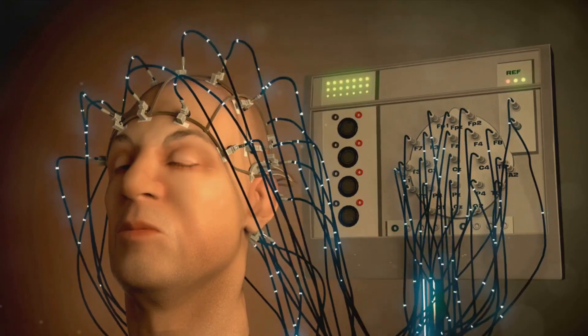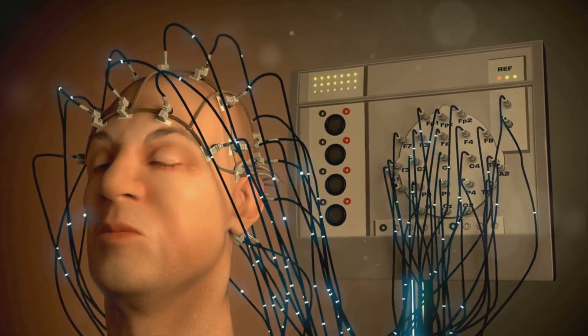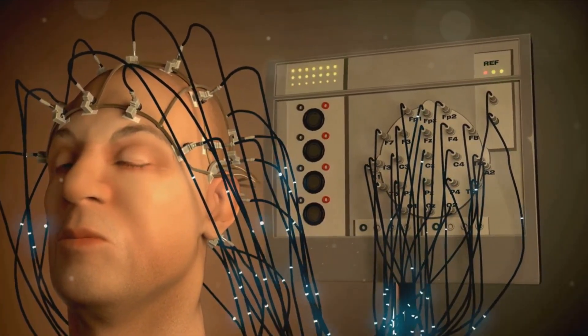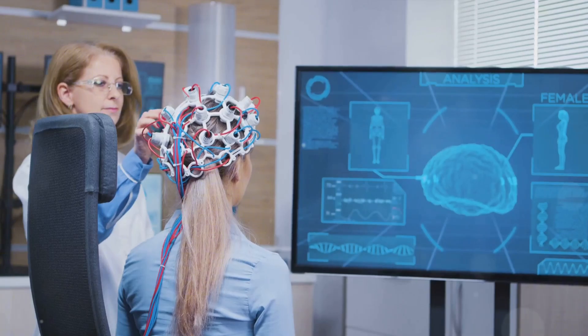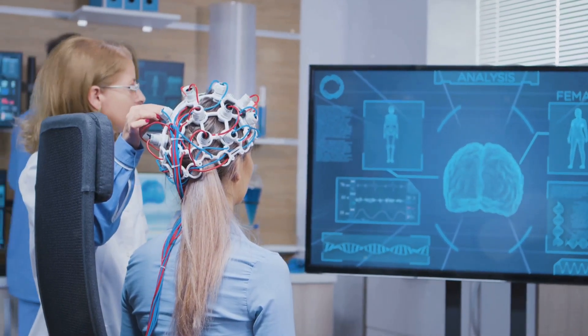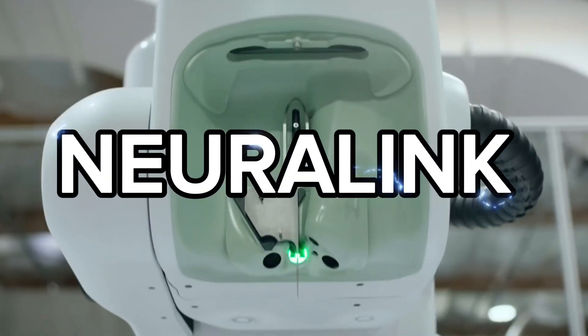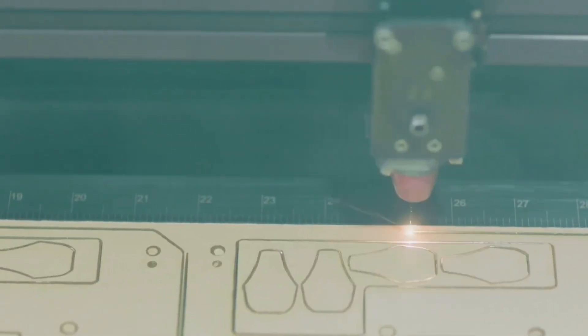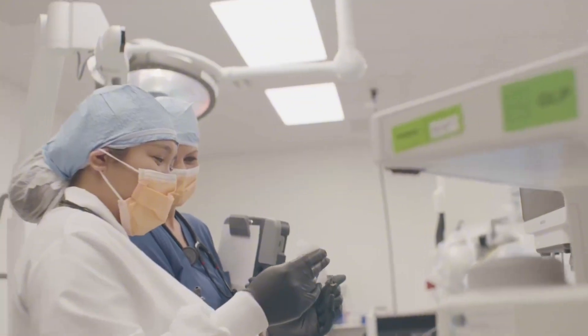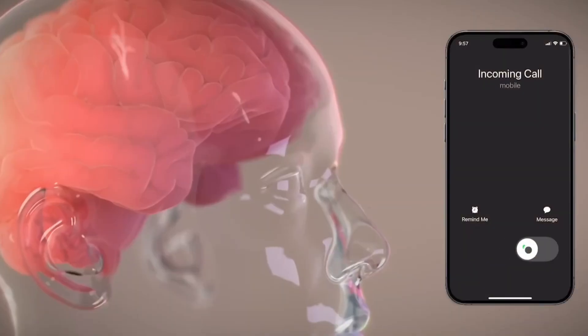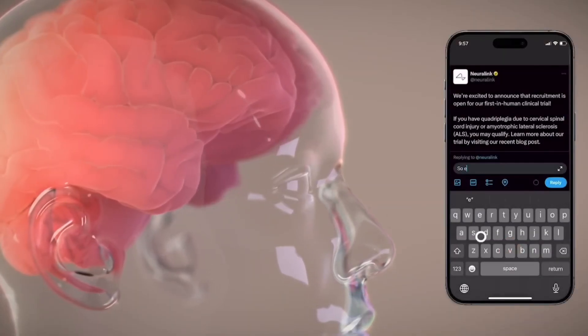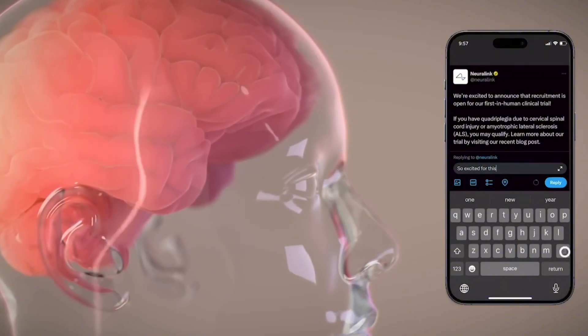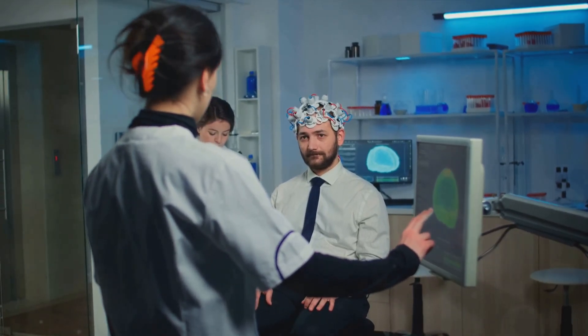BCIs are devices that bridge the gap between the human brain and a computer, translating the brain's electrical signals into digital commands. Think of it as learning a new language, where your thoughts are the words and the computer is the listener. The most prominent example of this technology is a project called Neuralink, initiated by Elon Musk. Neuralink and similar projects aim to restore lost functions in people with neurological disorders. Imagine being able to control a prosthetic arm just by thinking about it, or even restoring sight to the blind. The possibilities are both exciting and mind-boggling, but BCIs are only one piece of the puzzle.